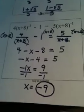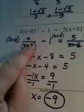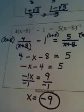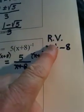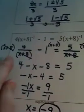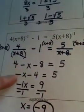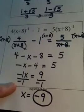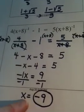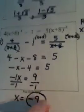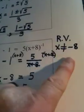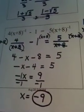So what did we do here? Step 1: we got rid of negative exponents. Step 2: we stated our restricted values. Step 3: we multiplied through by the LCD. Step 4: we solved the equation. And step 5: we made sure the answer was not the restricted value. And we're done.